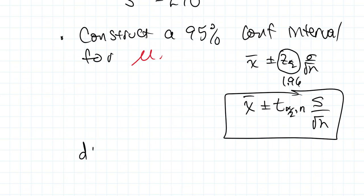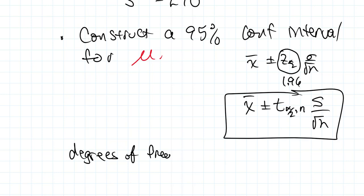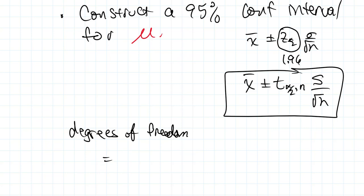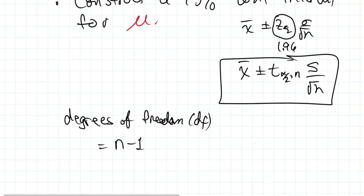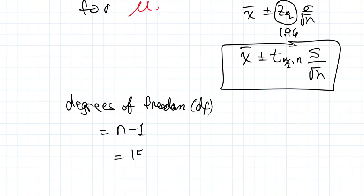In the t-distribution table, you'll see something called degrees of freedom, or df. Degrees of freedom is simply the number of elements in your sample minus 1. In this case, since we have 15 in our sample, we have 14 degrees of freedom. That's the row we look up in the table to find our t value.